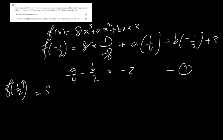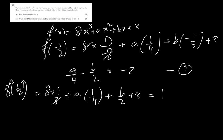Then you do f of one-half. You get 8 into one-eighth plus a into one-quarter plus b over 2 plus 3, equal to 1, since the remainder is 1. The 8 into one-eighth gets cancelled, so you get a over 4 plus b over 2 equal to minus 3. This is equation 2.